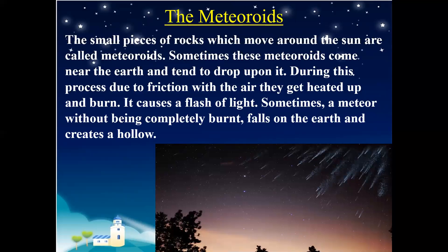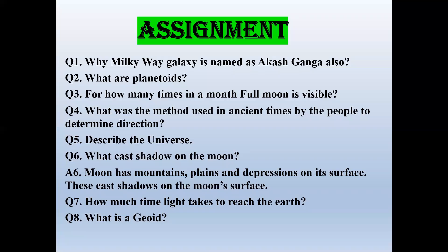So students, this was a quick explanation of Geography Chapter 1. Now let us look at a few questions: Why is the Milky Way Galaxy also named Akash Ganga? What are planetoids? How many times in a month is a full moon visible? What method was used in ancient times to determine direction? Describe the universe. What casts shadows on the moon? How much time does light take to reach the Earth? And what is a geoid? I request all of you to please go through the reading of this chapter and solve these questions.